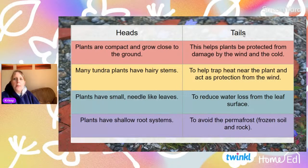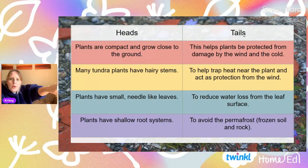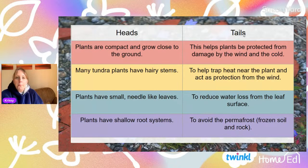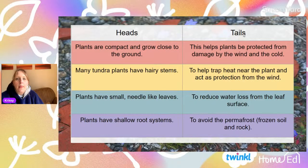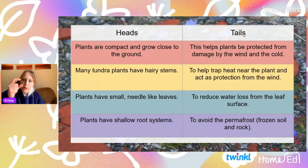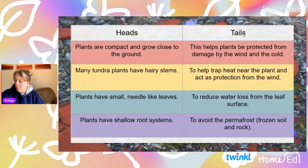They have hairy stems because hairy stems trap in the heat. Look at your arm — it will have fine hairs all over it. When you're cold and you get goosebumps, it's because your hairs are standing up on end to trap heat into your body. Tundra plants do the same — they have hairy stems to help protect and keep them a bit warmer. They have really small needle-like leaves to reduce any water loss from the leaf surface. And they have shallow roots to avoid the permafrost — they can only grow little roots because there's only this small area of active soil.